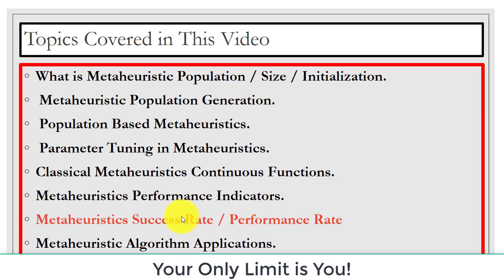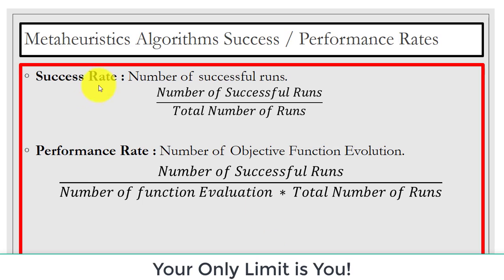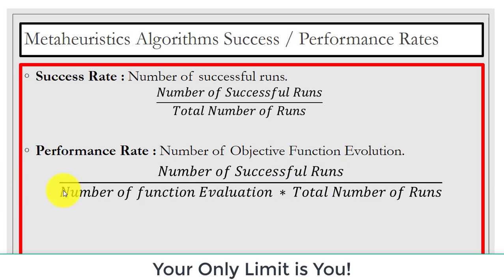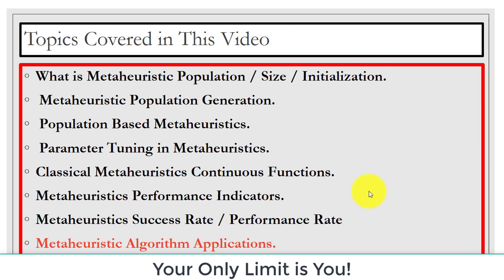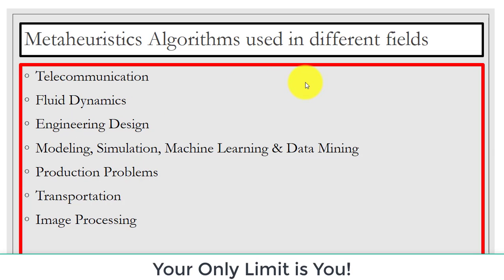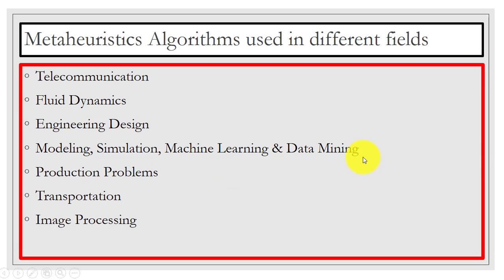How do we measure success rate and performance rate for a metaheuristic? Success rate is the number of successful runs divided by the total number of runs. Performance rate is based on the number of objective function evaluations, computed as the number of successful runs divided by the number of function evaluations times the total number of runs. Finally, metaheuristic algorithms can be applied in image processing, production problems, machine learning, data mining, engineering design, fluid mechanics, and telecommunications.